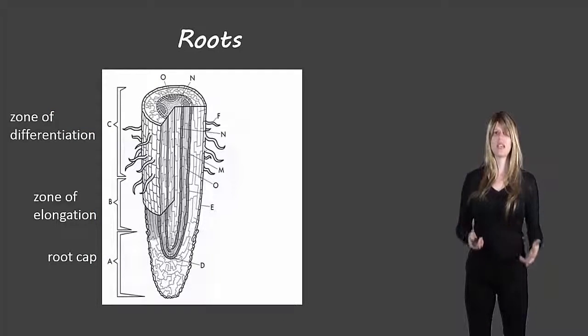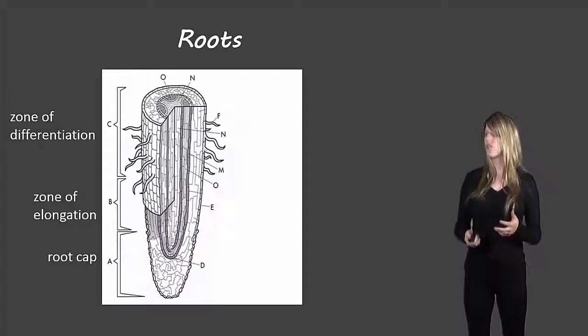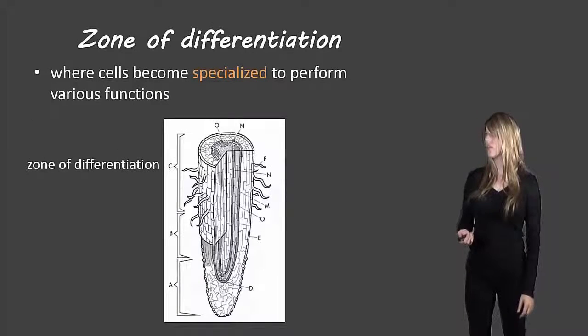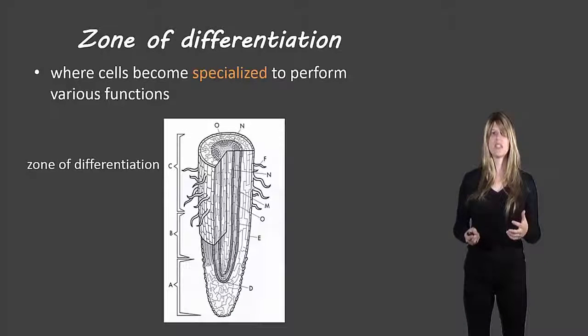So there are different sections of the root. There's the zone of differentiation which is closer to the top, the zone of elongation which is below that, and then the root cap which is the very bottom of the root. So let's take a look at each of these one at a time.